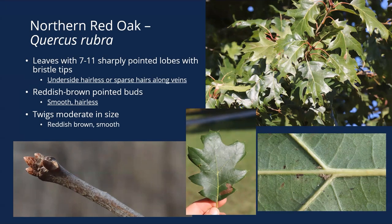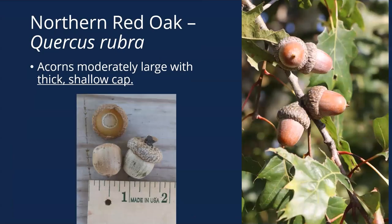Twigs are moderate in size, reddish brown and smooth. The buds themselves are reddish brown, pointed, and kind of smooth and hairless. Really, those classic red oak leaves — 7 to 11 sharply pointed lobes with bristle tips. This has one of the larger red oak acorns: moderately large with a thick shallow cap on top, a pretty big heavy acorn for northern red oak.